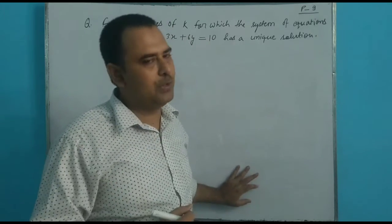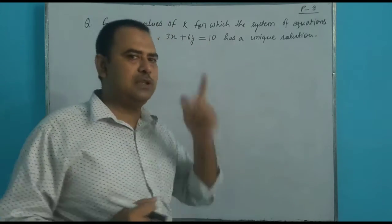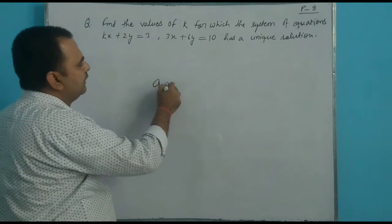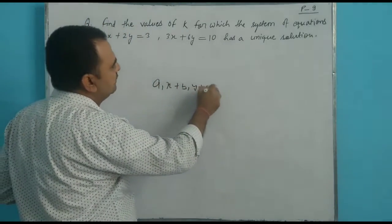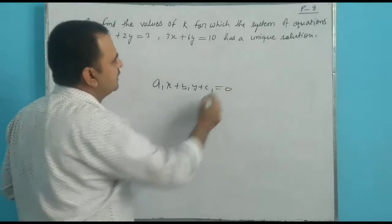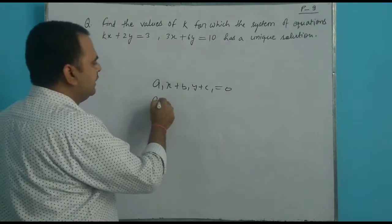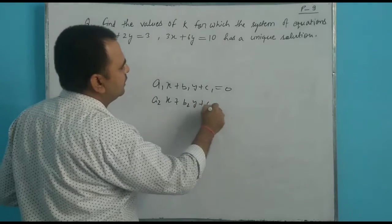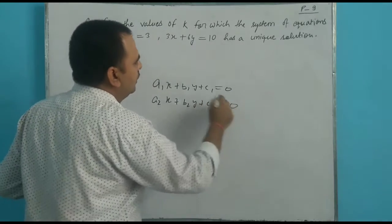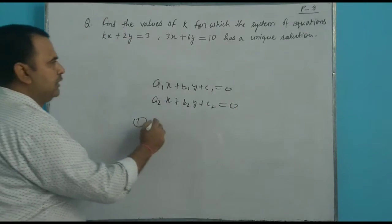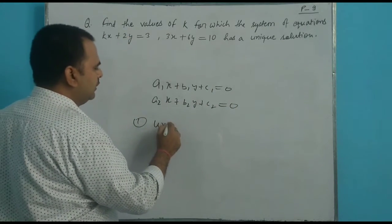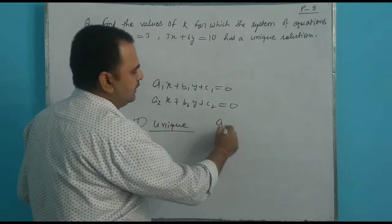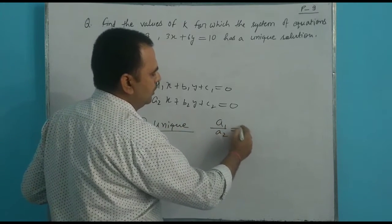For the unique solution case, the standard form of two linear equations is: a1x plus b1y plus c1 equals 0, and the second linear equation is a2x plus b2y plus c2 equals 0.